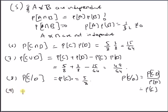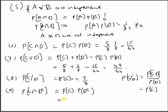Next is probability of C∩D complement. From a previous video, we learned that if two events C and D are independent, then C and D complement are also independent. So probability of C∩D complement equals probability of C times probability of D complement, which is 5/8 times (1 minus 3/8), giving 5/8 times 5/8, so probability of C∩D complement equals 25/64.